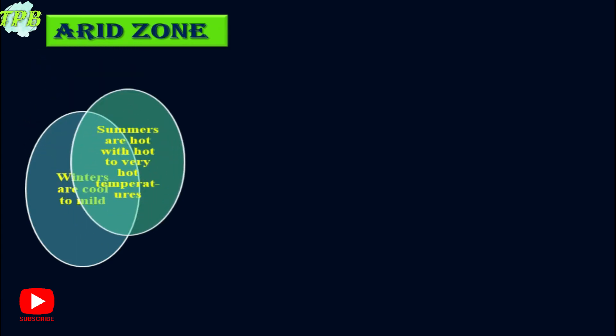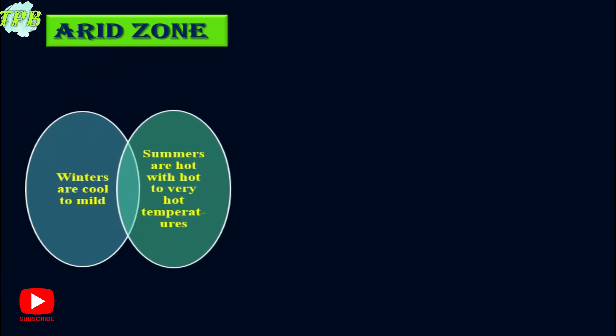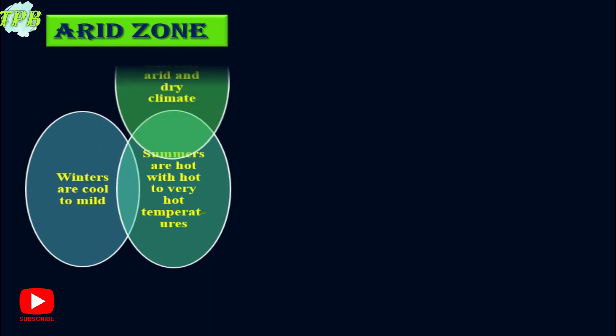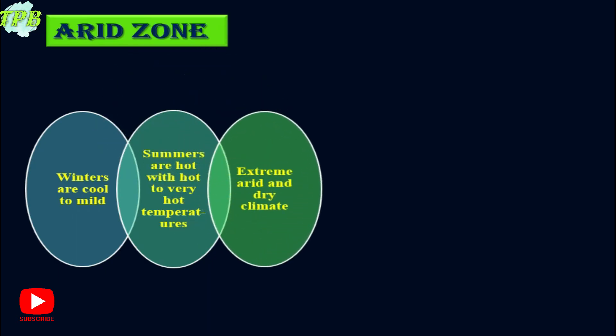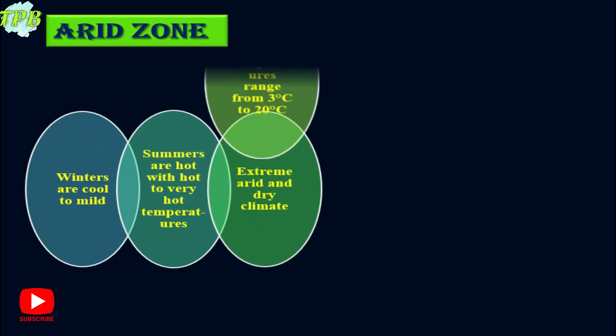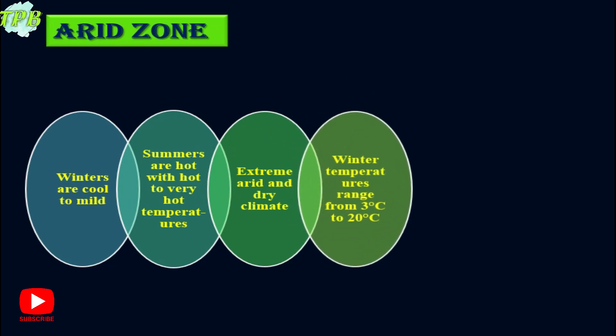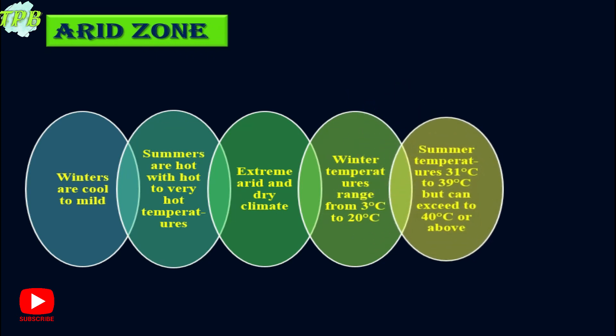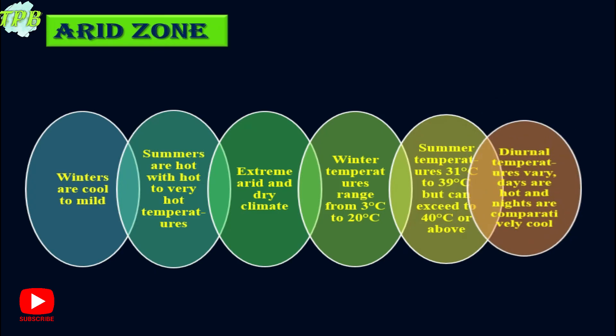The arid zone has cool to mild winters. Summers are hot with hot to very hot temperatures. An extreme arid and dry climate is experienced here. The winter temperatures range from 3 degrees Celsius to 20 degrees Celsius, and the summer temperatures are from 31 degrees Celsius to 39 degrees Celsius, but they can exceed 40 degrees Celsius or above.